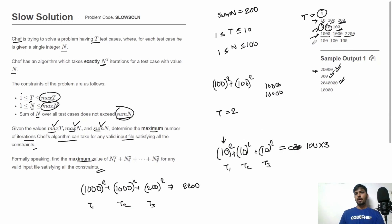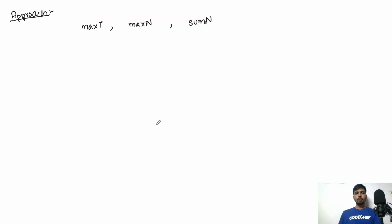In the fourth test case, max test cases is 100, max_N is 100, and sum_N is also 100. Here we can pass just one test case with N=100, so the output is 100² = 10000.